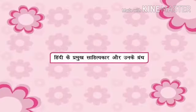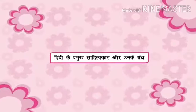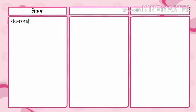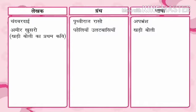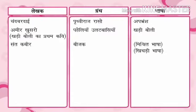Hindi ke pramukh sahityakar aur unke granth: 1. Chand Baradai — granth: Prithviraj Raso, bhasha: Apabhransh. 2. Ameer Khusro — Khari Boli ka pratham kavi, Paheliyan, Ulatbaansiyan, bhasha: Khari Boli. 3. Sant Kabir — Bijak, bhasha: mishrit bhasha / Khichdi bhasha.